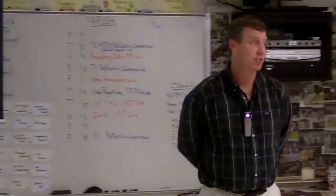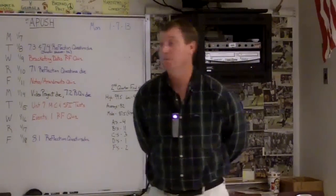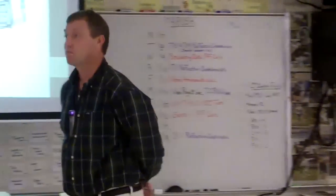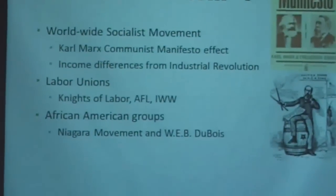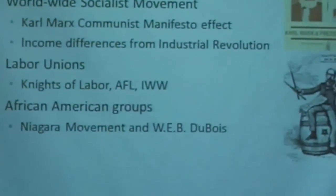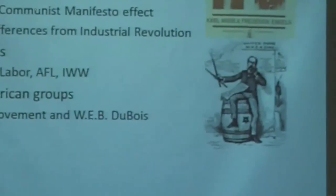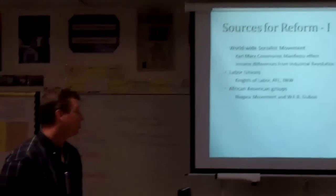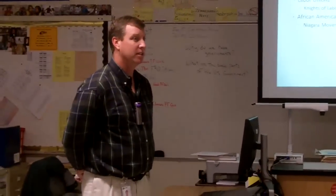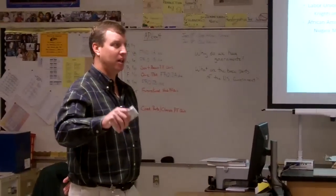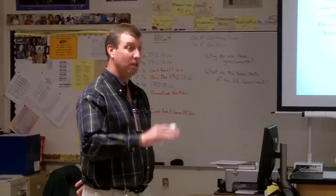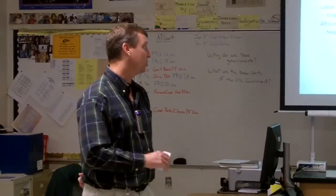African American groups wanting changes. Booker T. Washington, founding the Tuskegee Institute. But more so would be W.E.B. Du Bois and the Niagara Movement. What would the Niagara Movement later on become? The NAACP. Du Bois was saying we need equality now, while Booker T. Washington believed in gradual steps. Du Bois said no — we're equal automatically, there are no steps toward that.